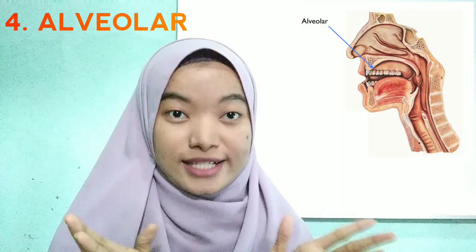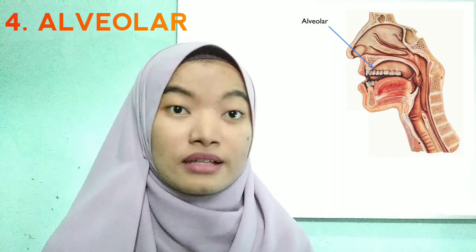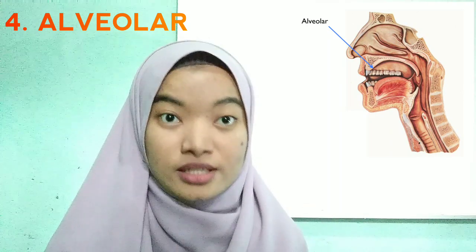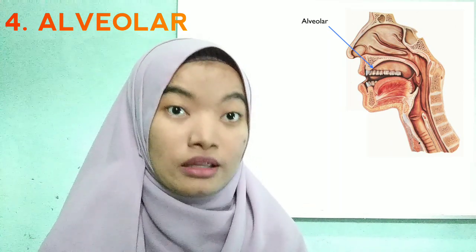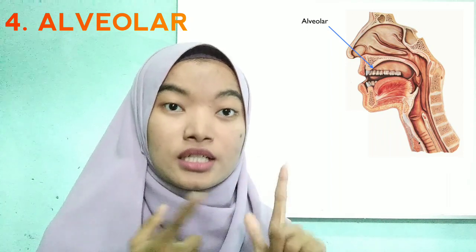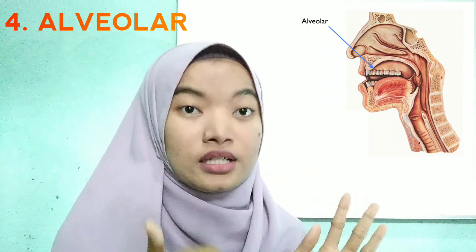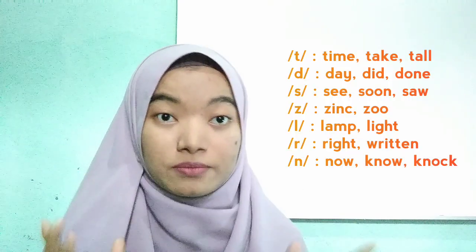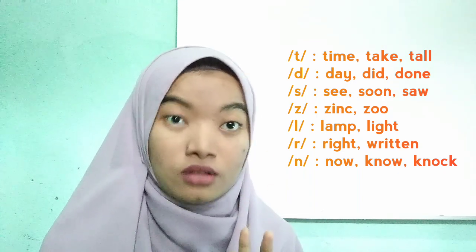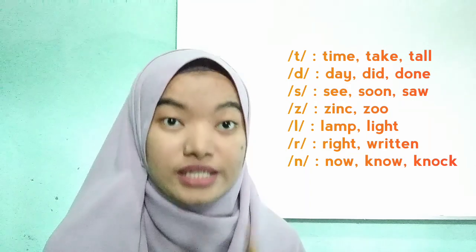Next, alveolar sounds are produced when the tip of the tongue touches or almost touches the alveolar ridge, or the tooth ridge. They include t, d, s, z, r, n, and l. Examples for t sounds are: time, take, toll. Examples for d sounds are: did, done.